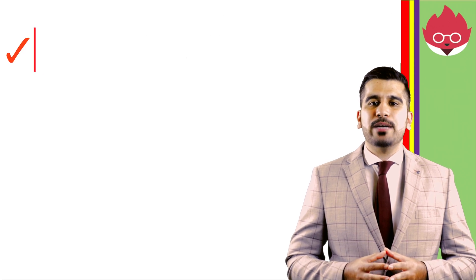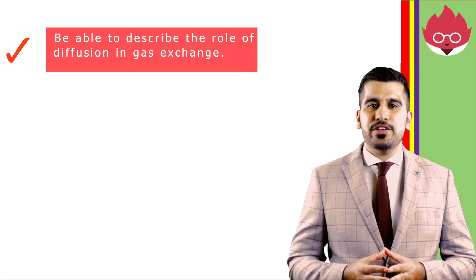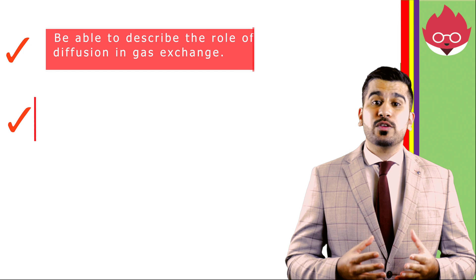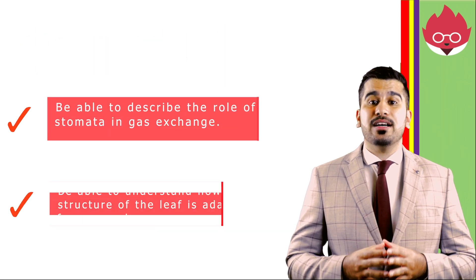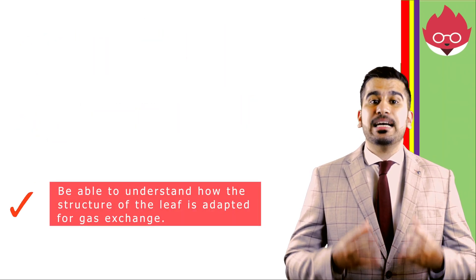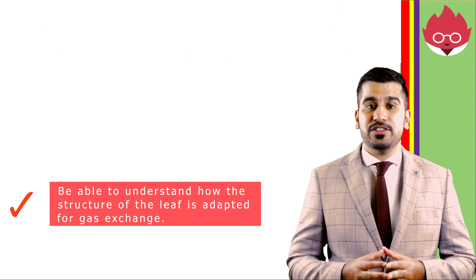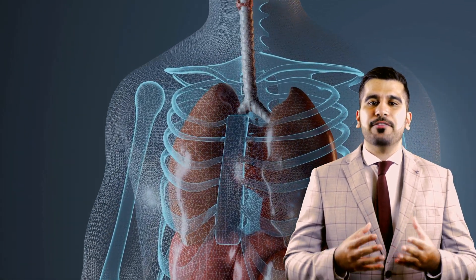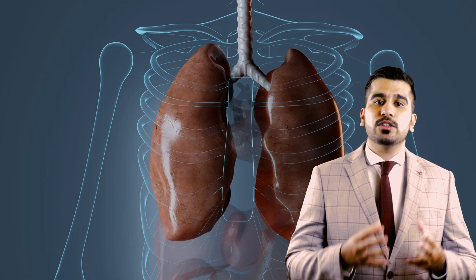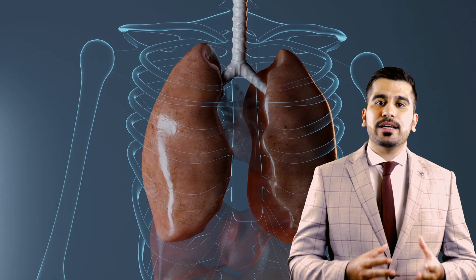By the end of the lesson, you should be able to describe the role of diffusion in gas exchange, describe the role of the stomata in gas exchange, and understand how the structure of the leaf is adapted for gas exchange. In our next lesson, we'll look at the adaptations humans have for gas exchange. We'll be looking at the structure of the thorax and the alveoli, and we'll finish by talking about the biological consequences of smoking.